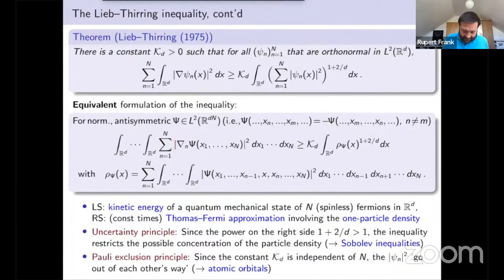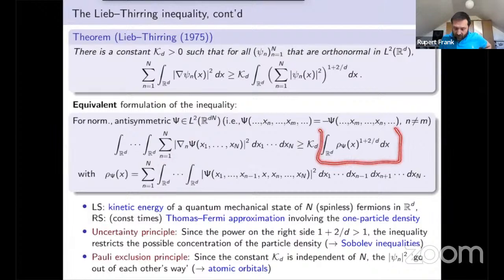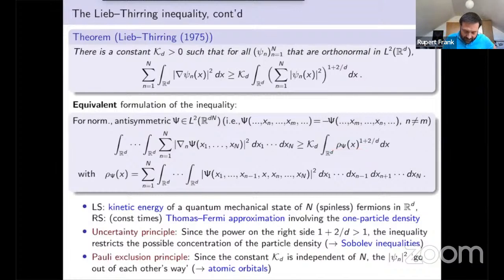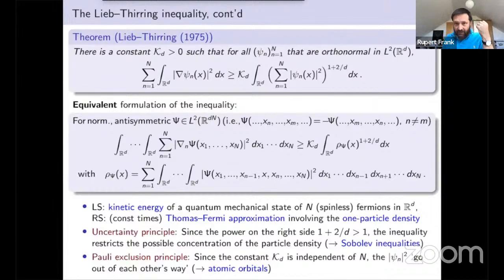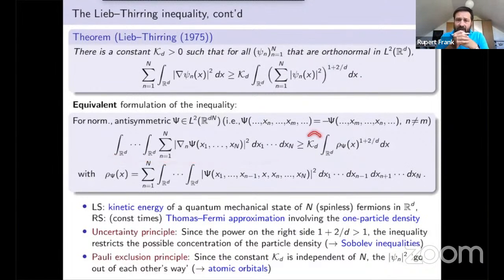What the inequality says is that this true quantum mechanical kinetic energy can be bounded by a much simpler-looking quantity, where you are integrating only over Rᵈ and there are no gradients. The quantity that appears on the right side is essentially the marginal of ψ squared, raised to the power 1 plus 2 over d — that is the so-called Thomas-Fermi approximation to the kinetic energy. Lieb-Thirring tells us this is a rigorous lower bound to the true quantum mechanical kinetic energy, provided you put some constant on the right side.